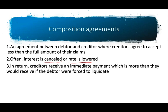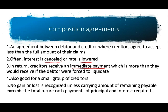In return under a composition agreement, the creditor expects to receive an immediate payment, which should be more than what they would receive if the debtor were first to liquidate. The creditor is essentially cutting their losses by accepting this payment and moving on. This is also best suited for a small group of creditors. No gain or loss is recognized unless the carrying amount of the remaining payable exceeds the total future cash payments of principal and interest — for example, if the liability on the books is $1,000,000 but can be satisfied with $800,000, you record a gain.